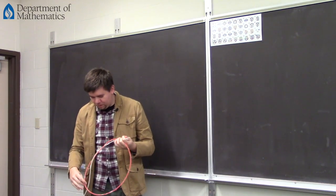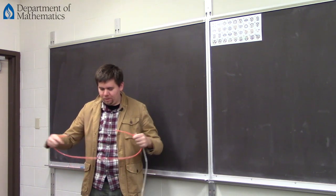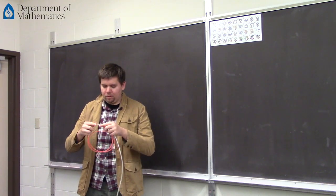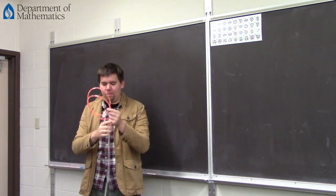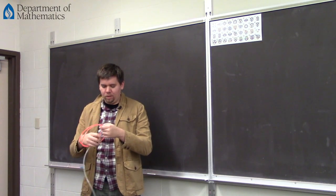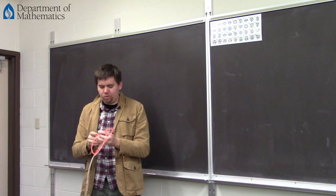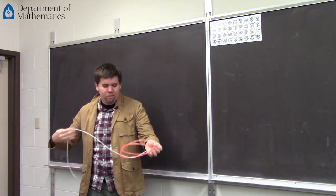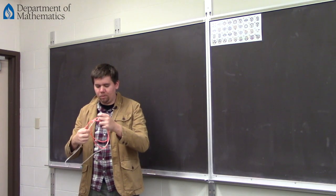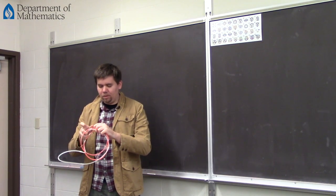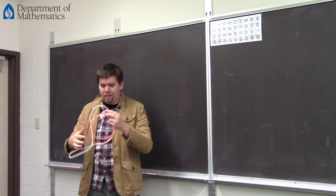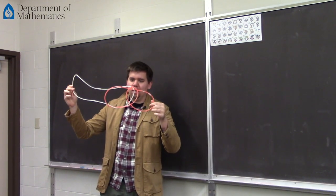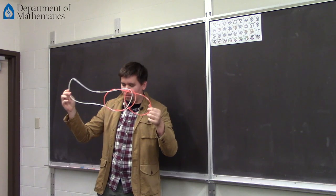That's pretty easy to see. But what's more challenging is maybe you have some link where the components are knotted up in some complicated way — maybe this component is like a trefoil or something, and maybe the other one comes and links and weaves in and out and between the components in some complicated way. Then it's maybe not so obvious how linked these components are.